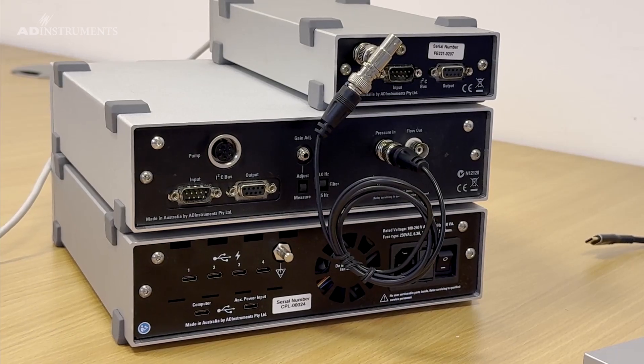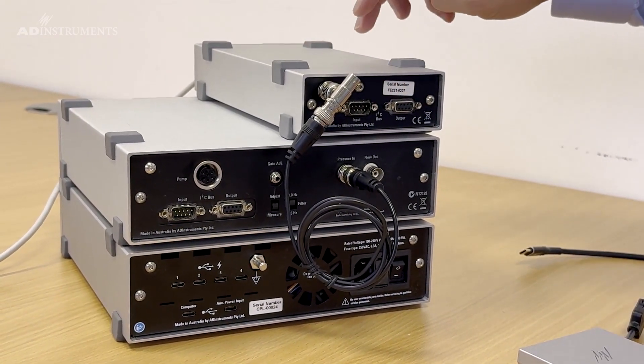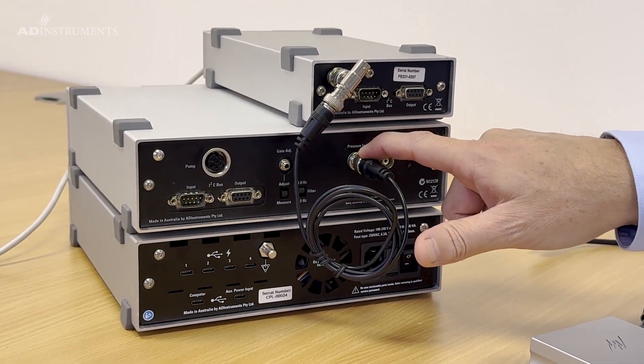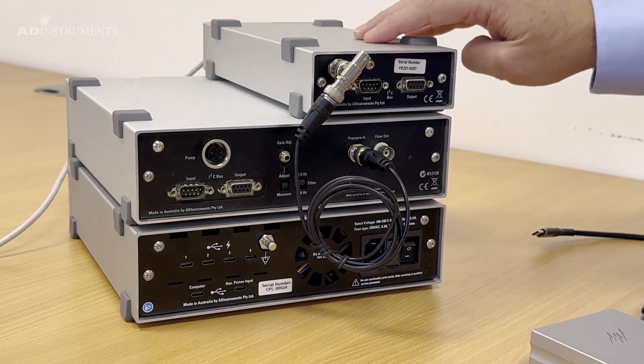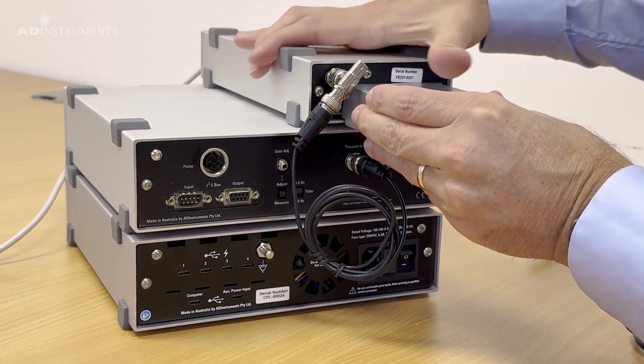For the connections on the back of the units we first connect a BNC T-piece to the output of the bridge amp. One side will go to the pressure input on the STH pump controller. Then to interface the bridge amp to the PowerLab we will use the front end interface.